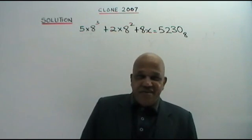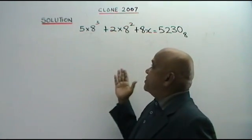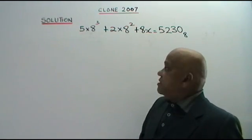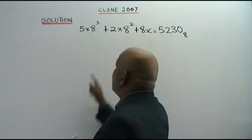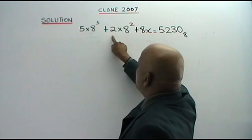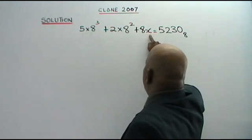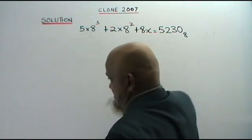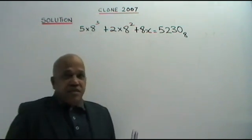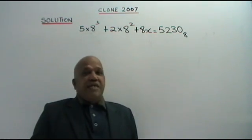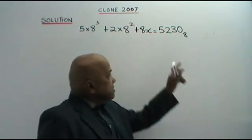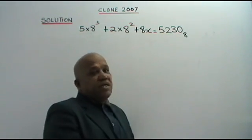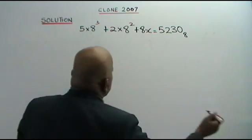Here I have for you a clone question based on the year 2007. Let's see how we solve this. 5 times 8 cubed plus 2 times 8 squared plus 8 times x equals 5, 2, 3, 0 in base 8. You are asked to find the value of x. This number is base 8, so we look at the arrangement of base 8.